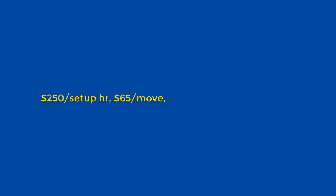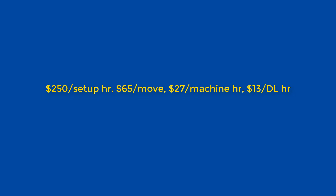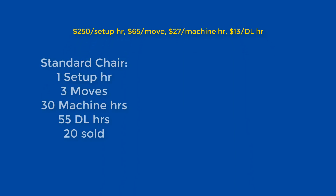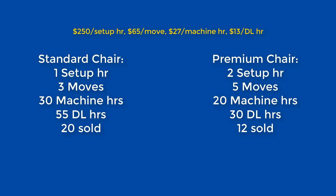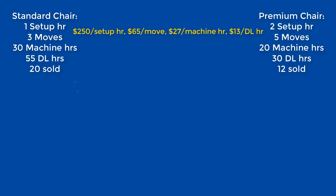Let's use this context to go over an example where we have $250 for setup hours, $65 for moving, $27 for machine hours, and $13 for direct labor hours. Let's assume that the following usages of each of the activities resulted in 20 standard chairs sold, and the following usages resulted in 12 premium chairs sold.